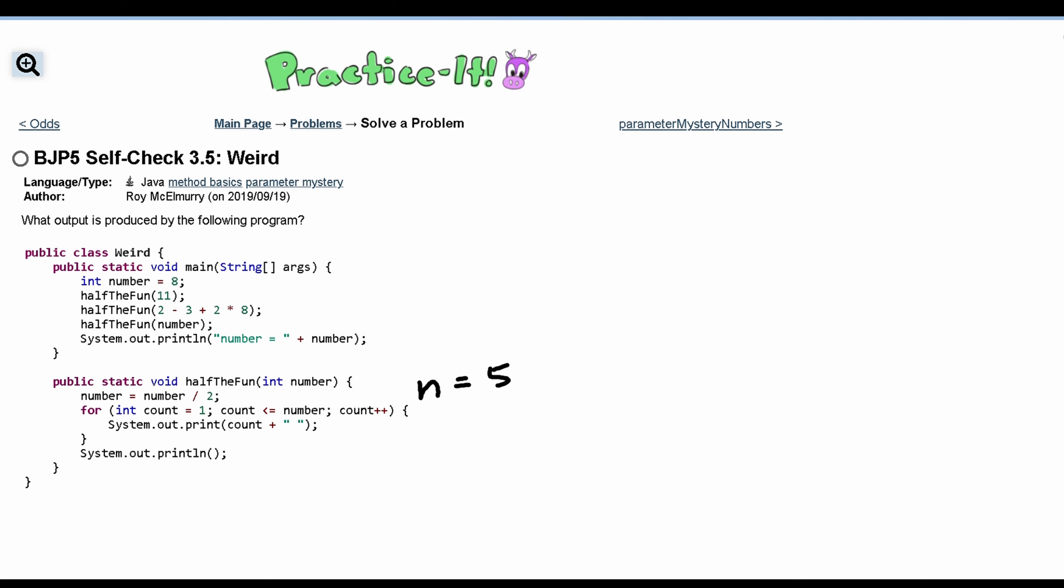So what we're returning here is 1 space, 2 space, 3 space, 4 space, and then lastly a 5 and then we will be going on to a new line. That's the end of our method.